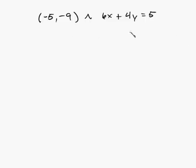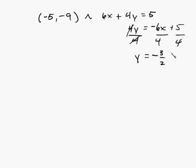So isolate the y here, so I get 4y is equal to, subtracting 6x gives me negative 6x plus 5, and divide by 4, and that cancels with this, and I get y is equal to, negative 6 over 4 simplifies to negative 3 halves, so minus 3 halves x plus 5 fourths. So here my m is going to be equal to negative 3 halves.